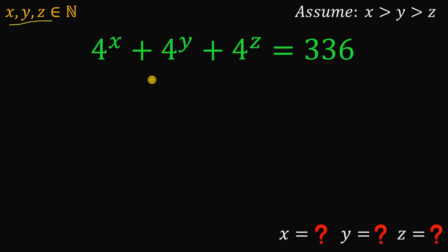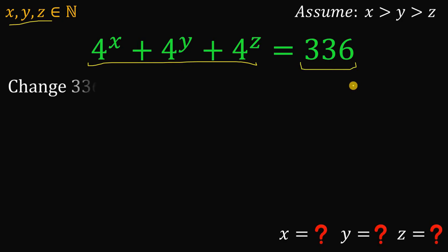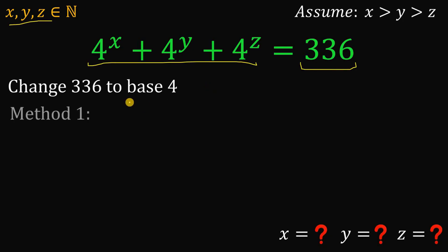Now to answer this kind of question, let's observe that the left-hand side of our equation has a base all equal to 4. It tells us that we need to convert 336 into base 4 — that's all we need to find the answer to this question. And we have two possible methods to convert any number to some base. In our case, we need to convert 336 to base 4.